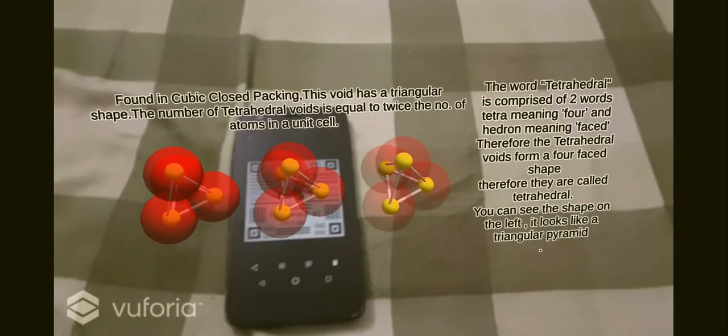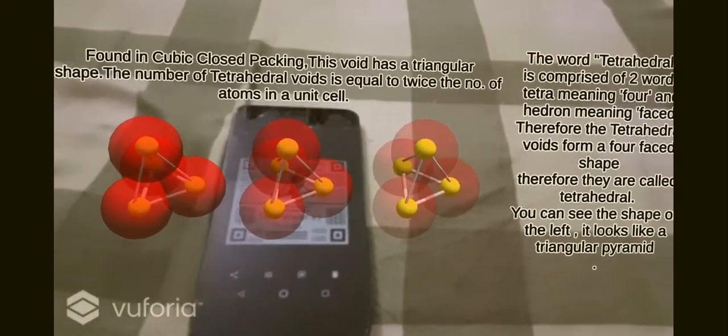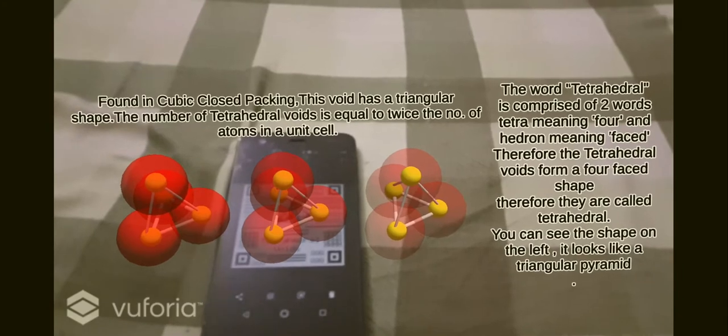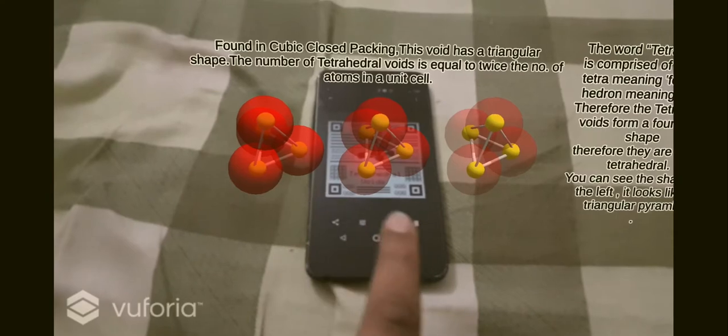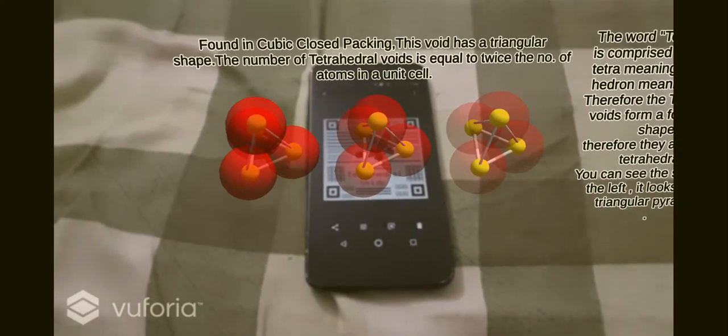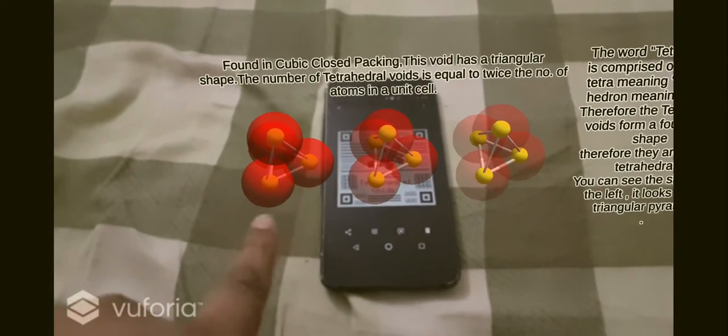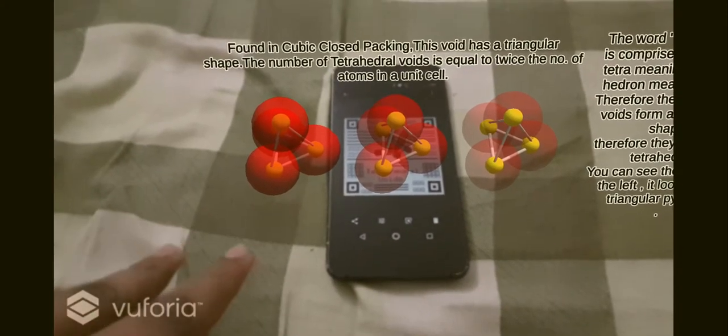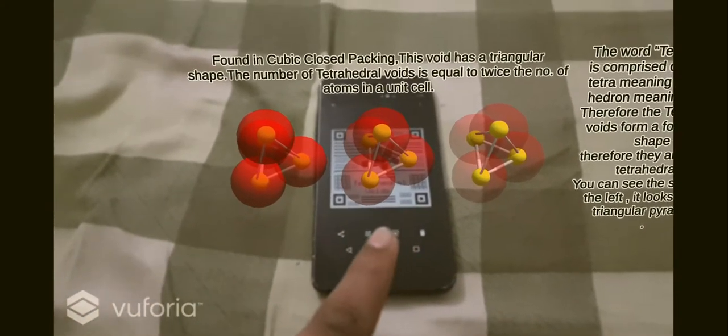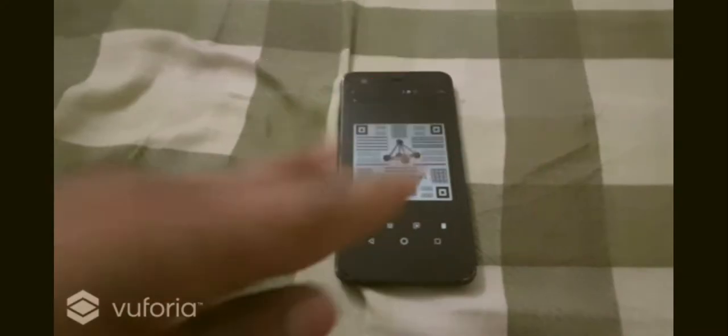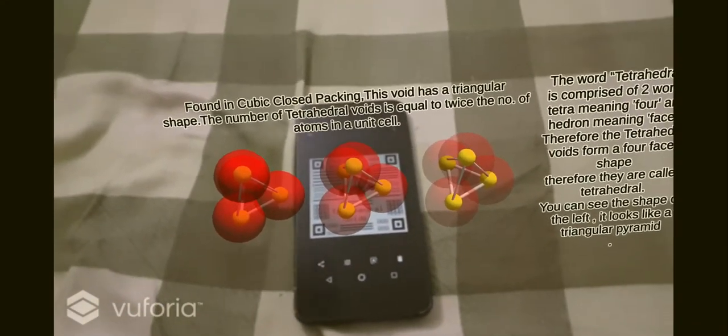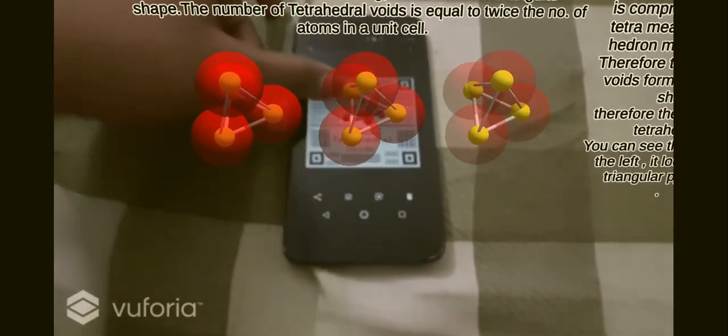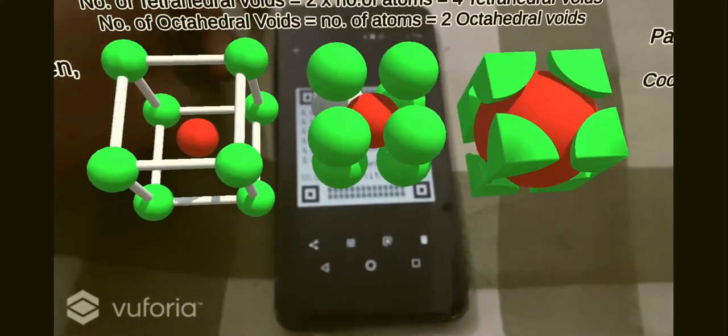There it is! These are the tetrahedral void structures. Tetra meaning four, hedron meaning faces. I made three of them to show how the spheres are placed or atoms are arranged. This is kind of a transition showing the shape they form internally and why they're called tetrahedral voids. They are found in cubic close packing.